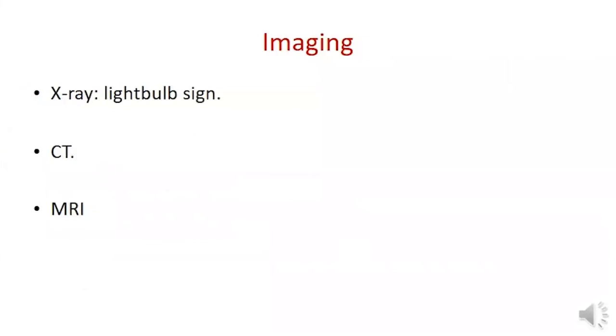On X-ray, the characteristic finding is the light bulb sign during acute dislocation. CT is used for bone deficiencies and MRI for soft tissue assessment.